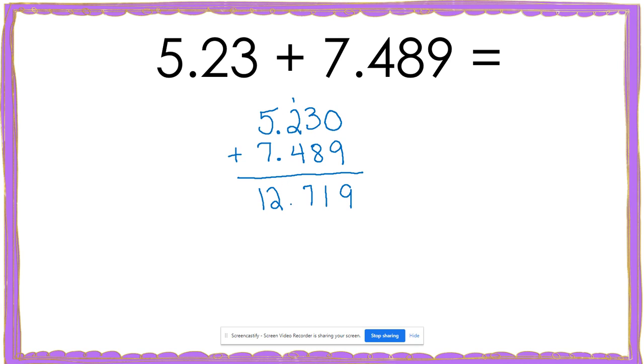Three plus four is seven. And five plus seven is 12. Now, I always need to make sure that I bring my decimal down in my sum. So the sum of 5.23 plus 7.489 is 12.719 or 12 and 719 thousandths.